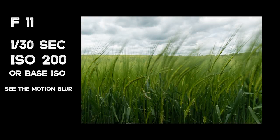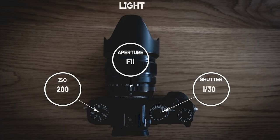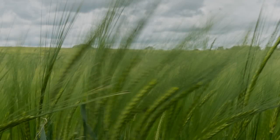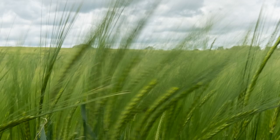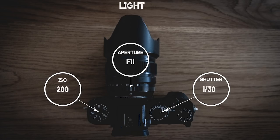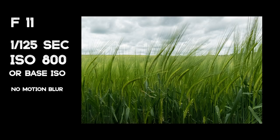Take this shot of barley for example — I've chosen an aperture of f11 to get my subject sharp from front to back, but my shutter speed is only 1/30th of a second with my ISO at its lowest, which is ISO 200 on this camera. You can see the motion blur in the grasses. This may be the look we're going for, but if we want to eradicate that motion we just need to increase our ISO, which in turn increases our shutter speed. Now we're at 1/125th of a second and that motion is completely frozen.